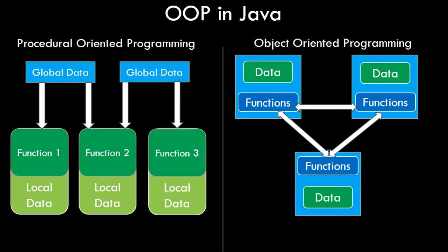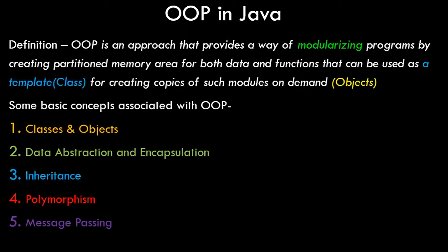Object oriented programming is an approach that provides a way of modularizing programs by creating partitioned memory areas for both data and functions, which can be used as a template class for creating copies of such modules on demand. To make it simpler: object oriented programming helps us create objects out of classes. These classes have data members and member functions, and when we create an object of a class we are essentially deriving our own custom data types.